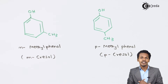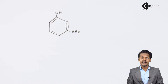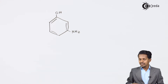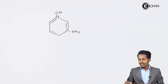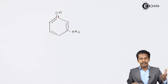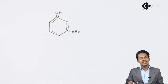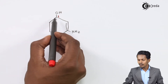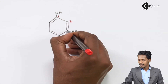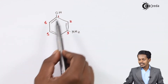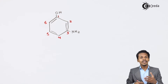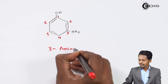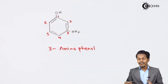Now let us understand how we give the IUPAC nomenclature to phenols. Here we have a benzene ring with OH and NH2 groups directly attached. The carbon to which OH is attached is carbon number 1. We number towards the side where the substituent is found, so the NH2-bearing carbon becomes carbon number 3. Therefore the name of this compound is 3-aminophenol.